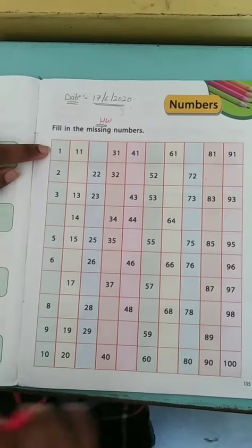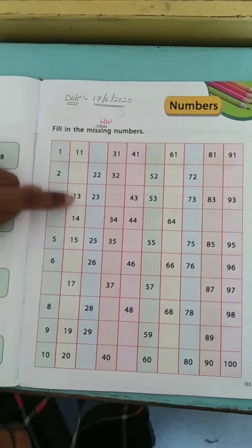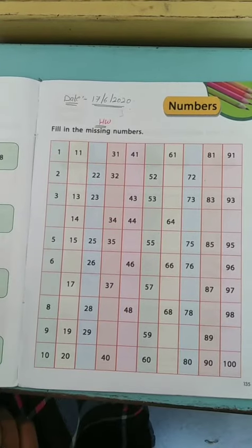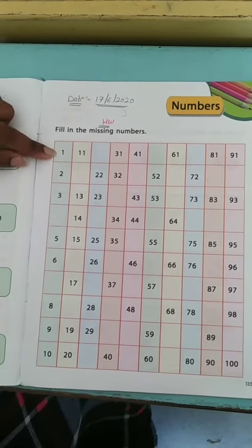What you have to do here? You have to fill all the boxes where the numbers are missing. Let us see one by one line. Look at the first line.